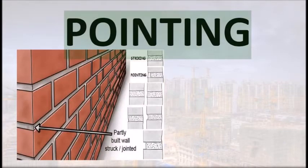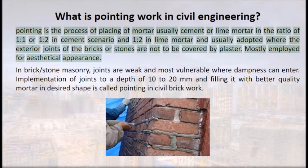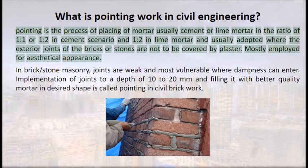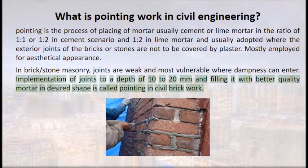Pointing is the process of placing mortar — usually cement mortar in ratio 1:1 or 1:2, or lime mortar in ratio 1:2 — in the exterior joints of bricks or stones that are not to be covered by plaster. It is mostly employed for aesthetical appearance. In brick and stone masonry, joints are weak and most vulnerable where dampness can enter. Raking joints to a depth of 10 to 20 mm and filling with better quality mortar in a desired shape is called pointing.